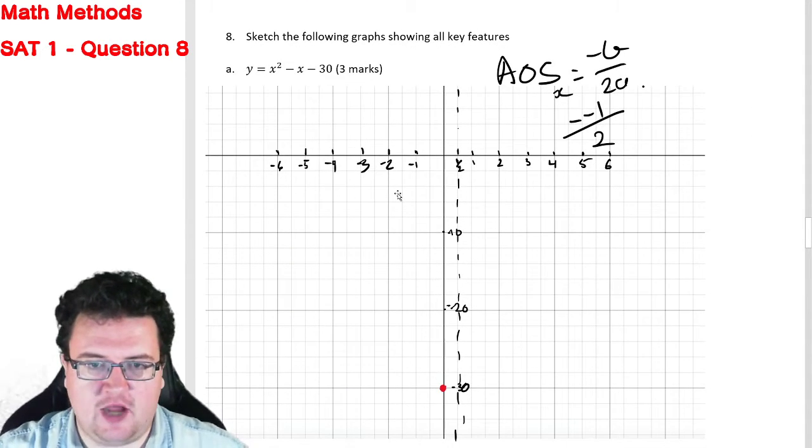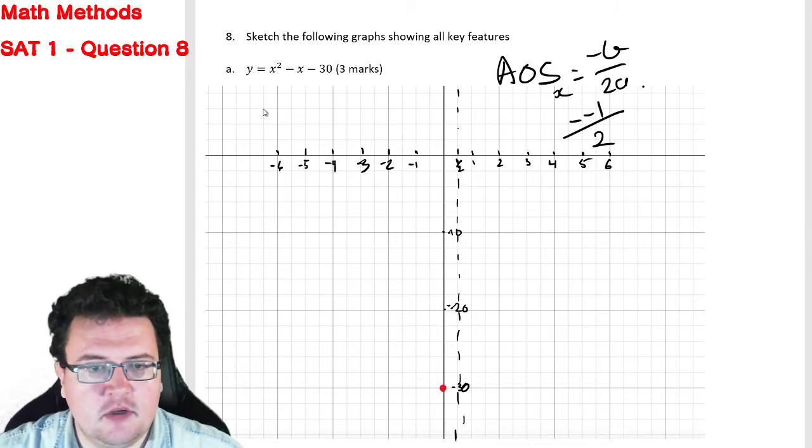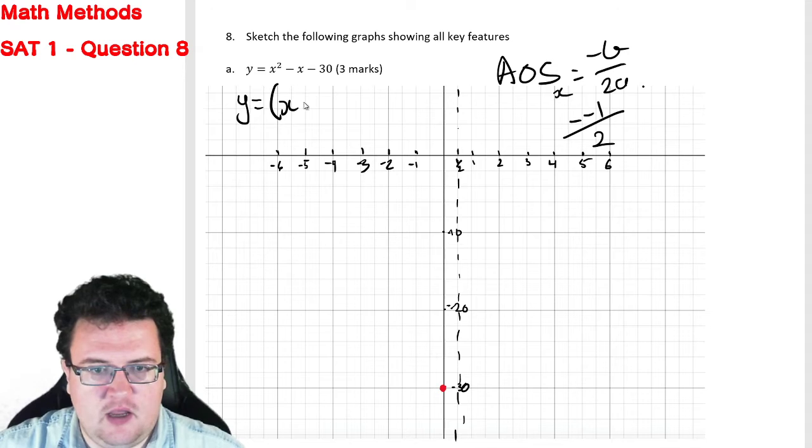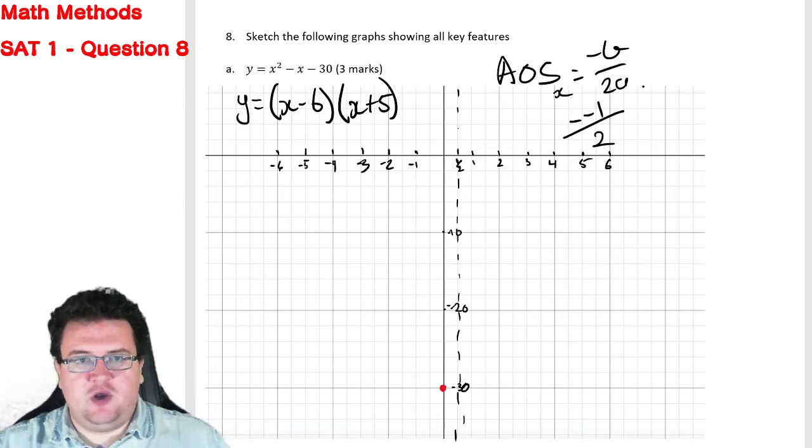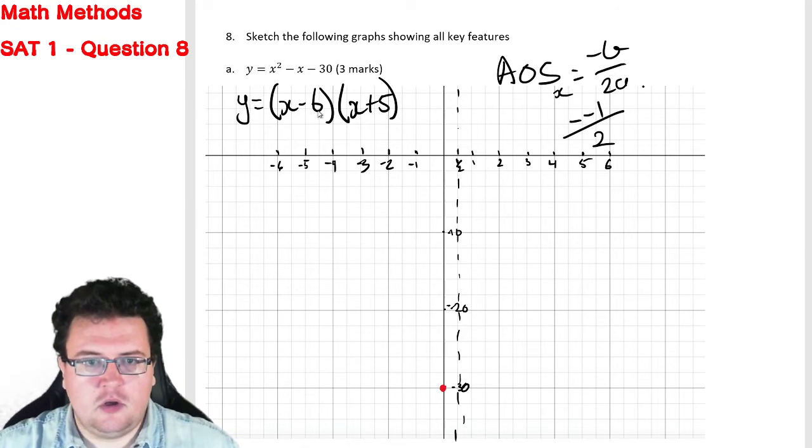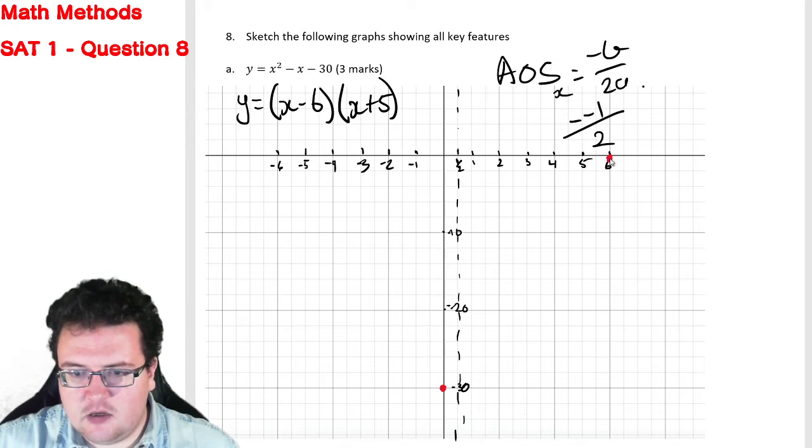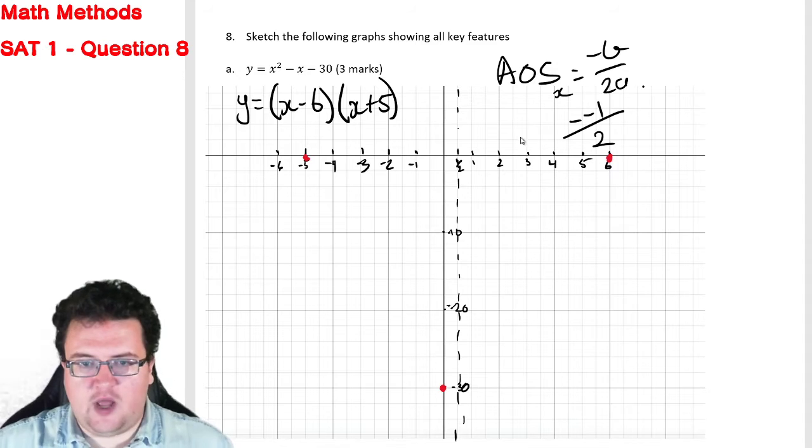So what we can then do is realize we know this is factorized because we just did it. And that means that y is equal to (x-6)(x+5), which means that we already know two more points. We know that when x is 6, y is 0, and when x is minus 5, y is 0.